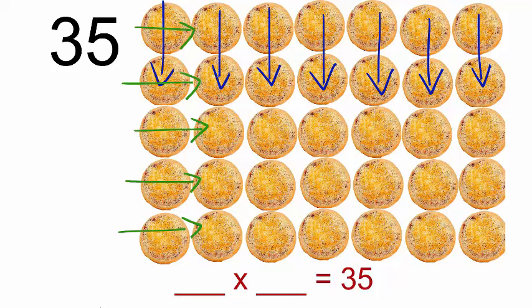So can we say seven into five is 35. Seven comes from the number of columns and five comes from the number of rows.